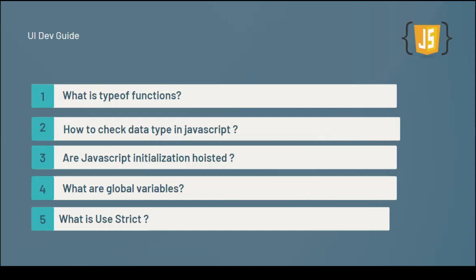The fourth question is: what are global variables in JavaScript? If you create a variable without var, let, or const — for example writing 'a = 10' — it becomes a global variable and attaches to the window object. You should know what global variables are, what the window object is, and what the document object is in that context.